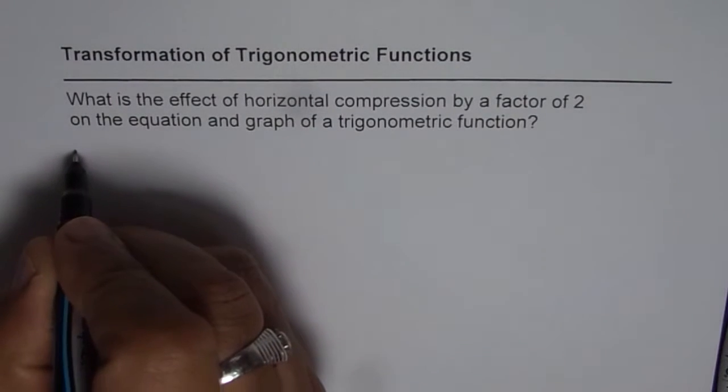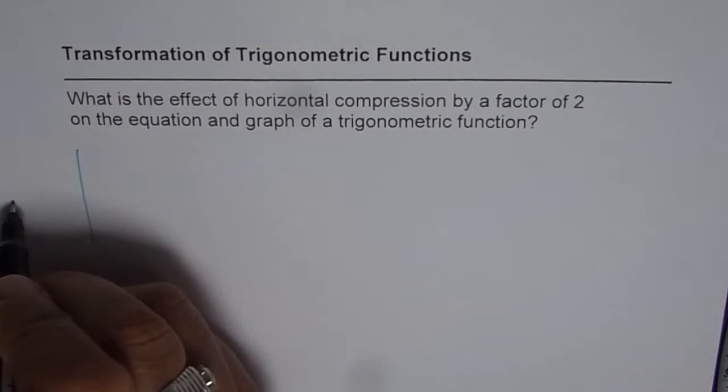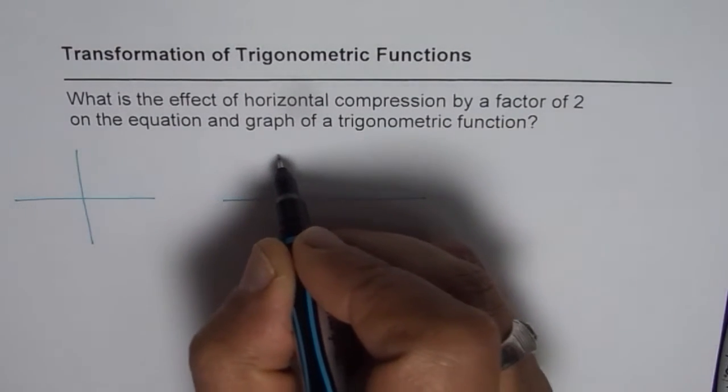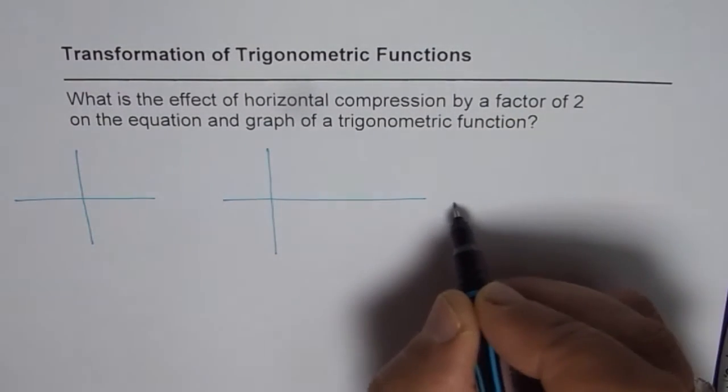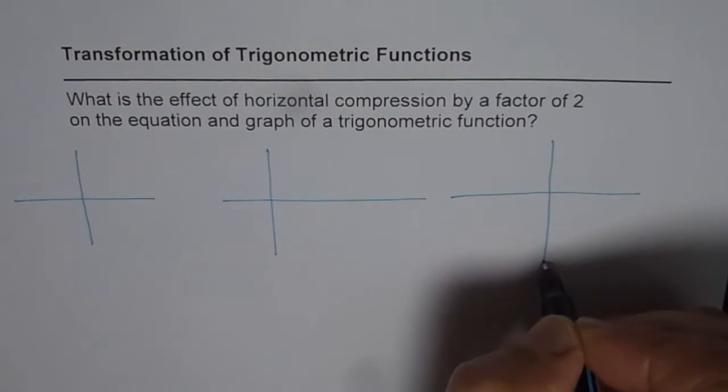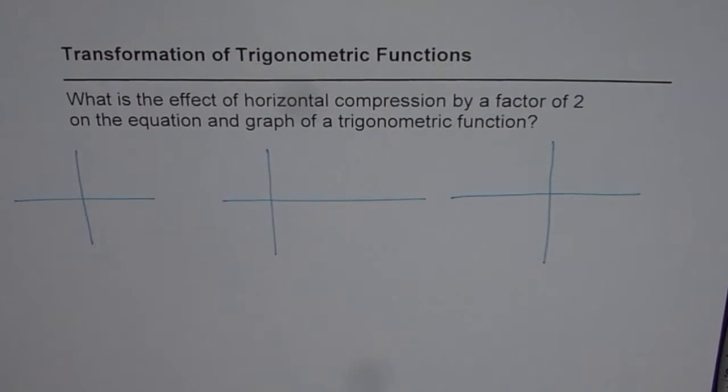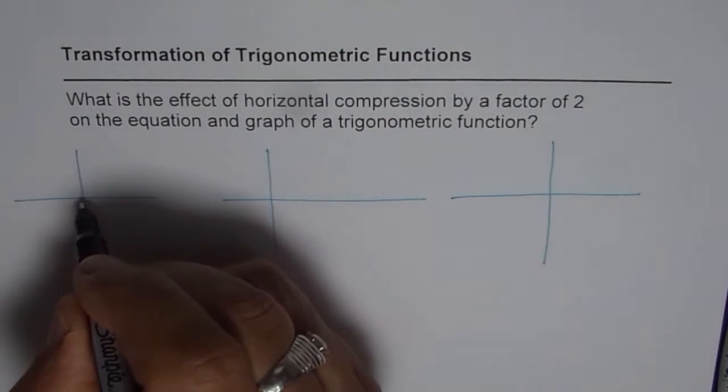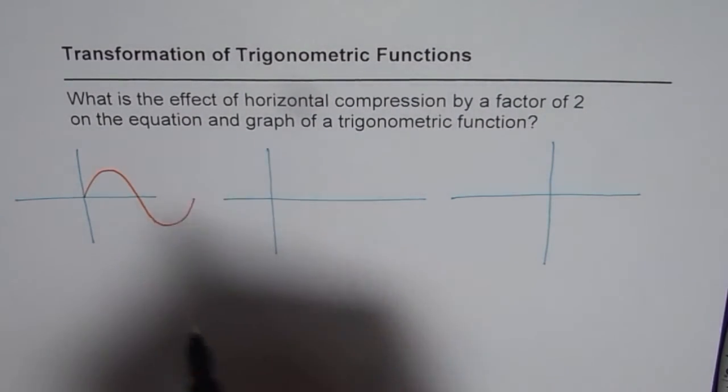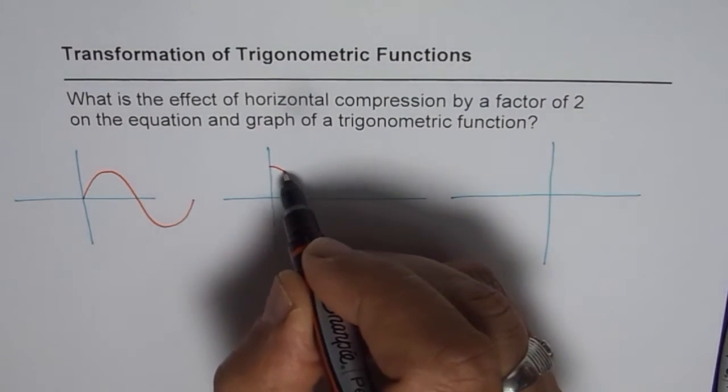So we will consider sine, cosine and tan functions and see how they get transformed when we have compression by a factor of 2. So let me first sketch these functions. Let us say this is the sine wave, let's say this is the sine wave and then let me sketch a cosine wave.